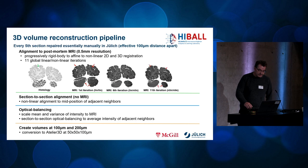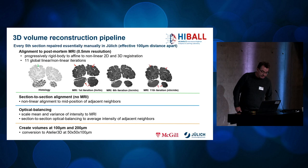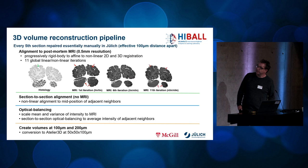Afterwards, a section-to-section alignment independent from the MRI was employed, involving a multi-scale non-linear alignment to the mid-positions of adjacent neighbors. This method ensured that each section was aligned with its neighboring sections, ensuring continuity and consistency throughout the complete dataset. Optical balancing was applied to scale the mean and variance of intensity to match that of the MRI scan, and additionally each section's intensity was balanced to the average intensity of adjacent neighbors.